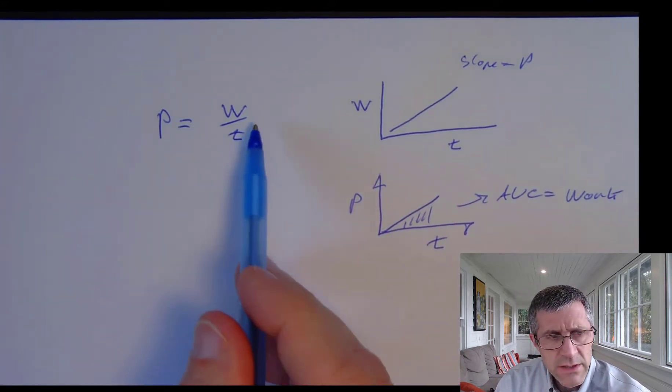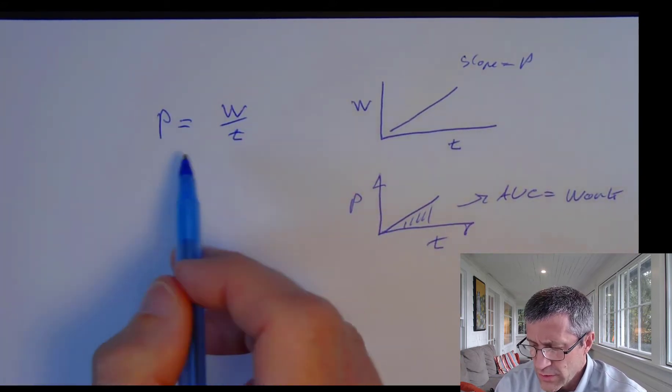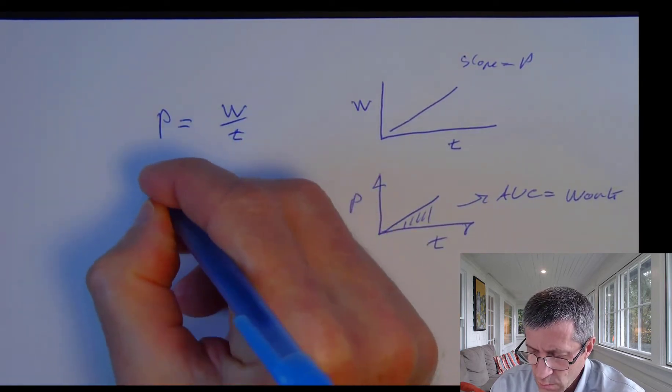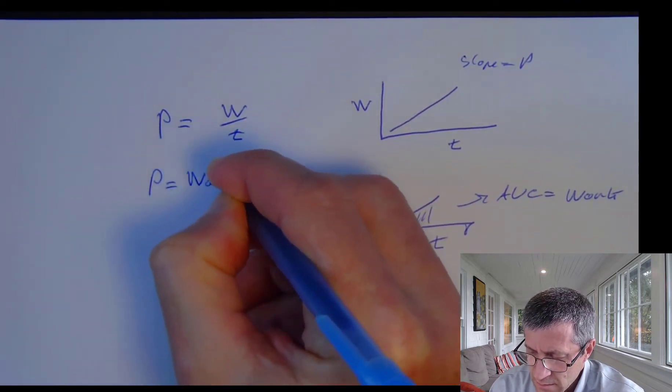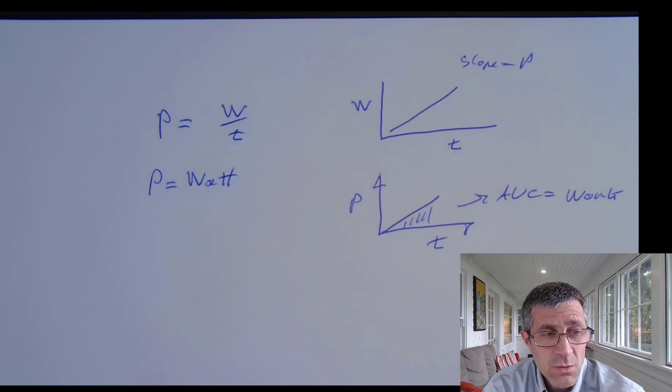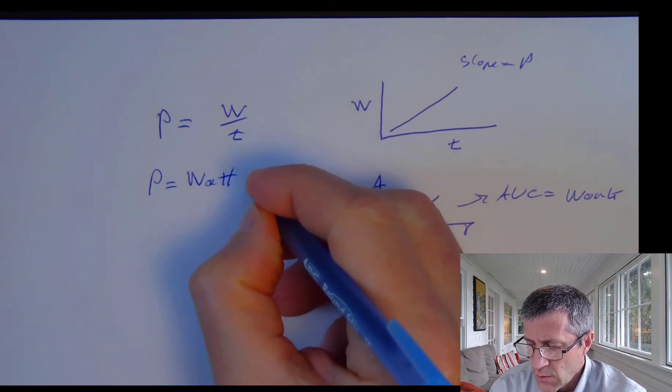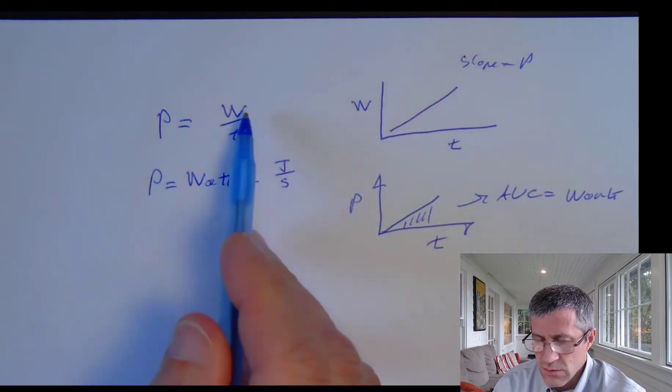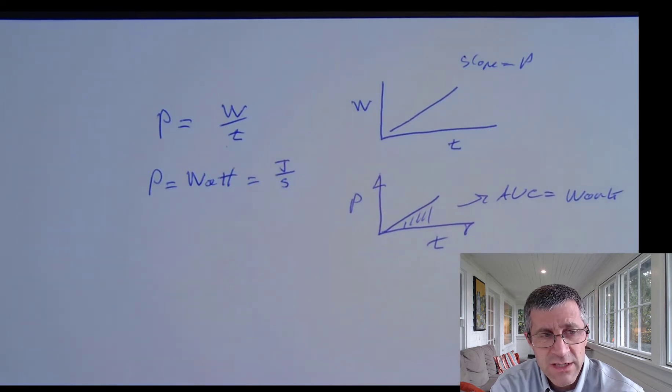The unit for power is going to be the watt. Sadly, we use W for work and for watt. In one case it represents a variable, in the other case it represents a unit. A watt is going to be a joule per second. Energy is always in joules, time is always in seconds. So a watt is a joule per second.